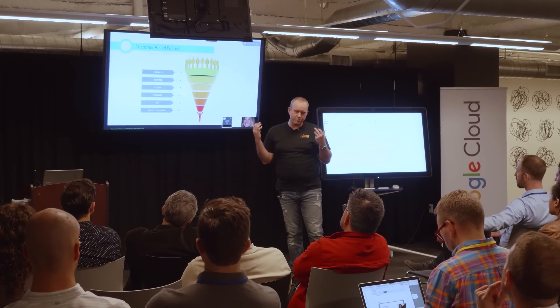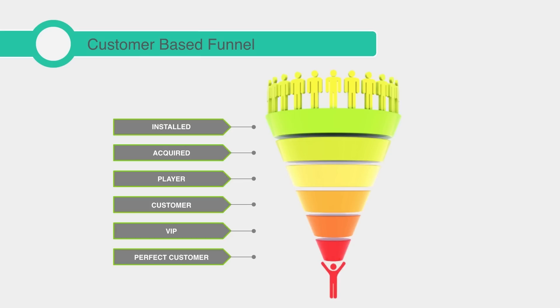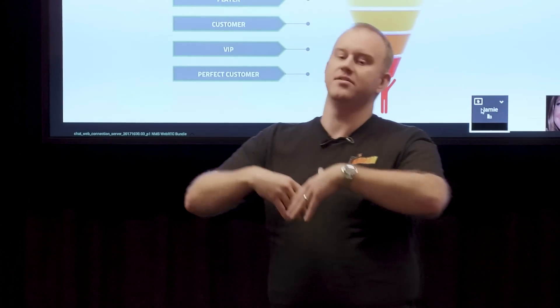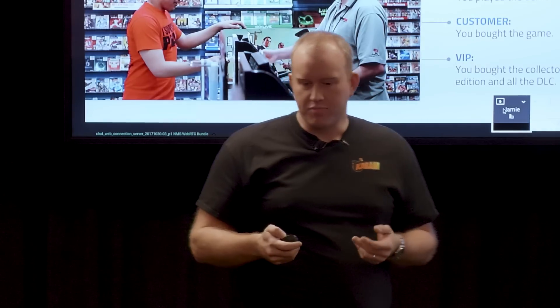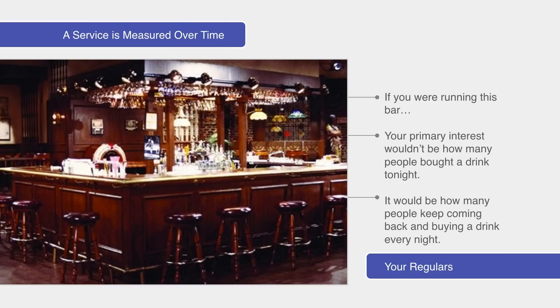Most people end up segmenting into a customer funnel: install → tutorial → player → customer → VIP → perfect customer. The real problem is these are retail metrics, not service metrics. It's like old boxed triple-A: the player is someone who played the demo, the customer bought the game. But mobile games are a service. If I was running Cheers, my primary interest wouldn't be how many people bought a drink one night — it's how many come back every single day as repeat customers.